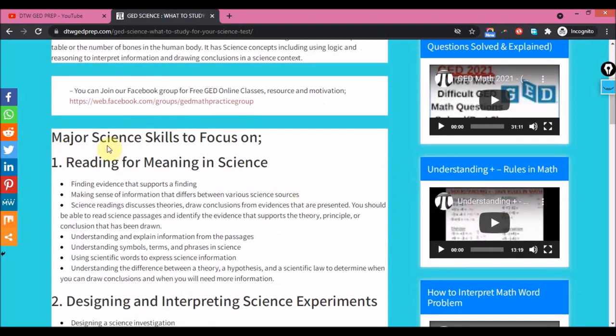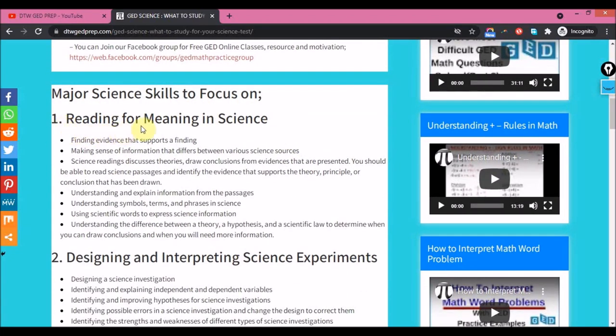Now the major science skills to focus on: number one is reading for meaning in science. You have science readings discussing some theories, drawing conclusions from evidence that are presented. So you should be able to read science passages, identify evidence that supports the theory, principle, and conclusion that has been drawn, finding evidence that supports a finding, making sense of information that differs between various science sources.